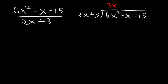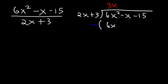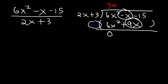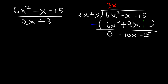Multiply: 3x times 2x is 6x squared, and 3x times 3 is 9x. Subtract: 6x squared minus 6x squared is 0. Negative x minus 9x is negative 10x. Bring down the negative 15. Now divide: negative 10x divided by 2x is negative 5.